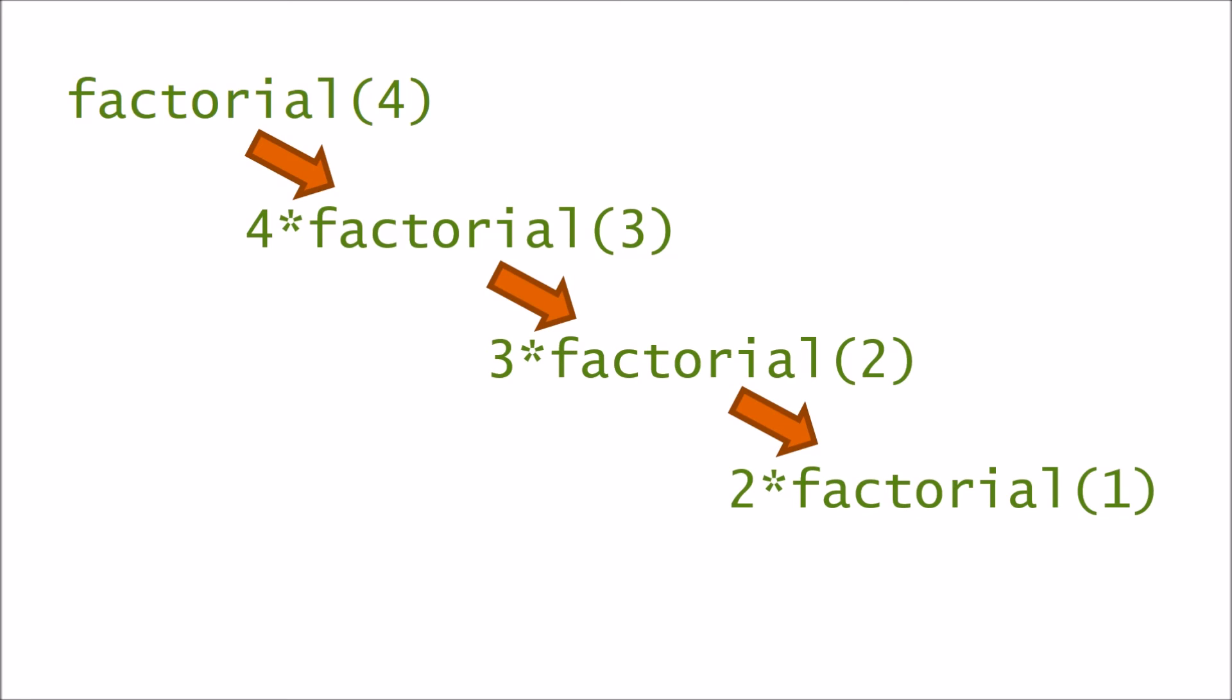This is very similar to the line of people in the queue. Each time we call the factorial function, it's just like asking the next person in the queue. The factorial of 1 is like the end of the queue. We don't need to work the value out. The factorial of 1 is just 1. This is called the base case.